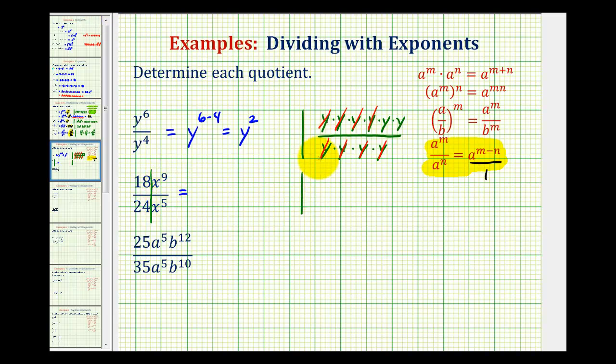So 18 over 24 - these both have a common factor of six. If we don't recognize that, we could write everything out in prime factored form. 18 is two times nine, and nine is three times three.